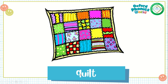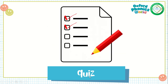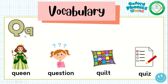Quilt — q-u-i-l-t — quilt. Quiz — q-u-i-z. Okay, we have: queen — q-u-e-e-n — queen; question — q-u-e-s-t-i-o-n — question; quilt — q-u-i-l-t — quilt; quiz — q-u-i-z — quiz.